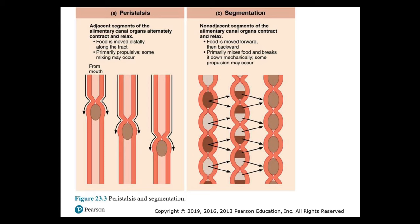Peristalsis is the major means of propulsion and involves alternating waves of contraction and relaxation. In peristalsis, adjacent segments of the alimentary canal organs alternately contract and relax, so food is moved distally along the tract — primarily propulsive, though some mixing may occur.